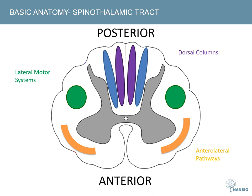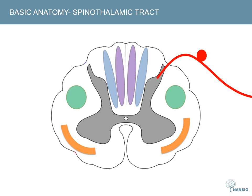Moving on to the anatomy of the spinothalamic tract: it is one of the anterolateral pathways that carries information on pain and temperature from the periphery upwards. There are some similarities with the dorsal columns — information for both pathways enters the cord dorsally and is carried by neurons whose cell bodies reside in the dorsal root ganglia. However, the neurons carrying pain and temperature information tend to be thin and unmyelinated, different from the thick myelinated neurons that contribute to the dorsal columns.